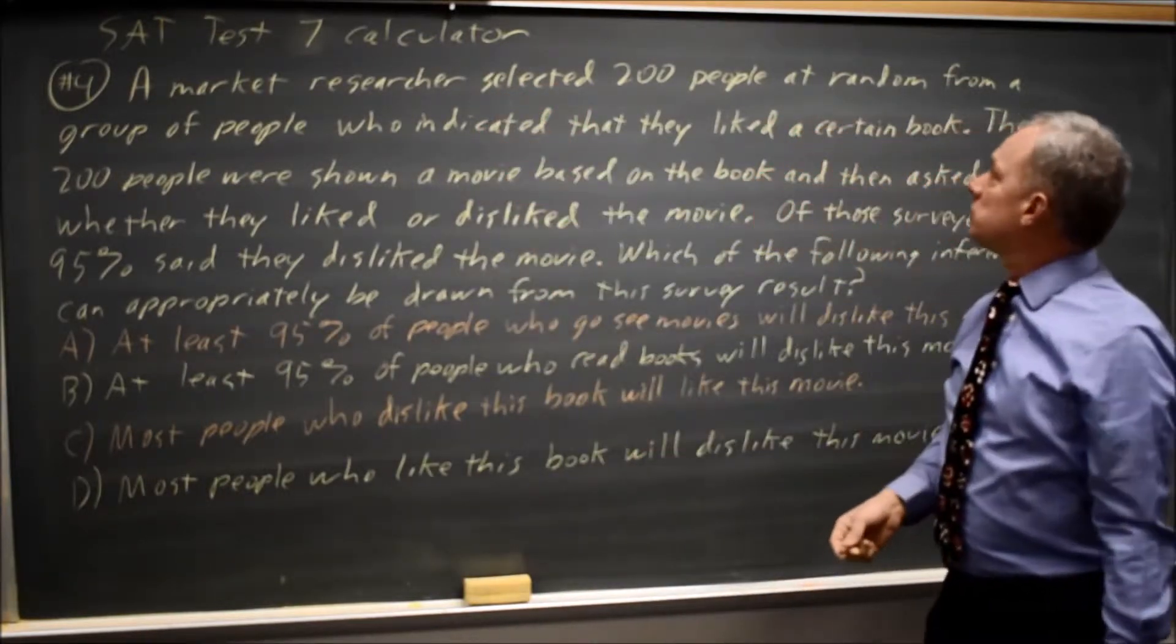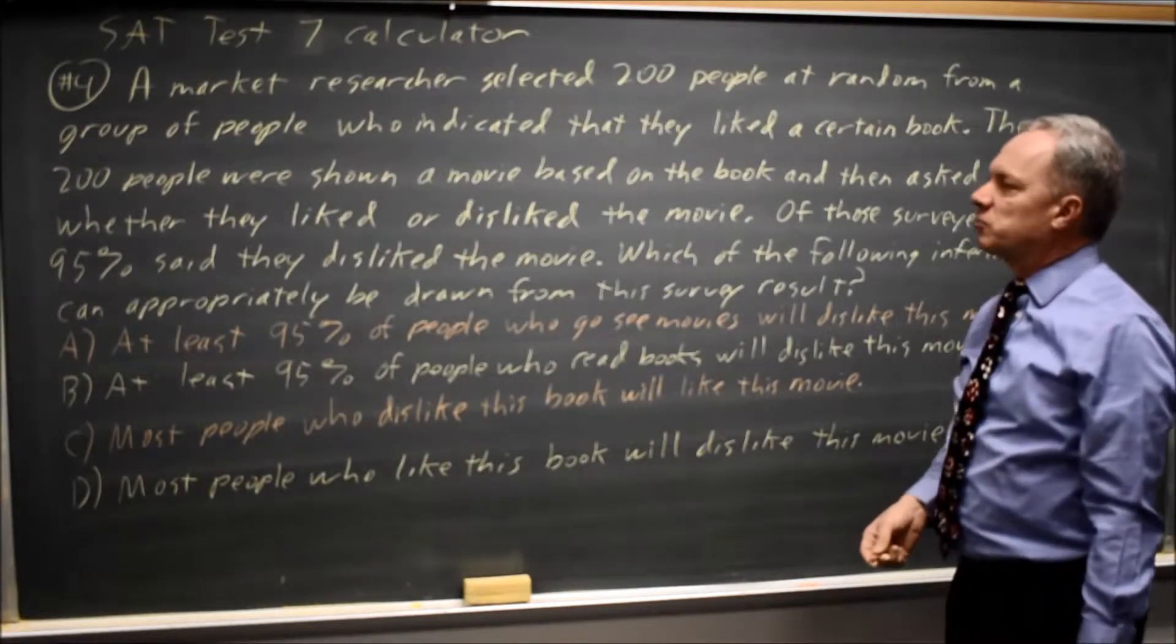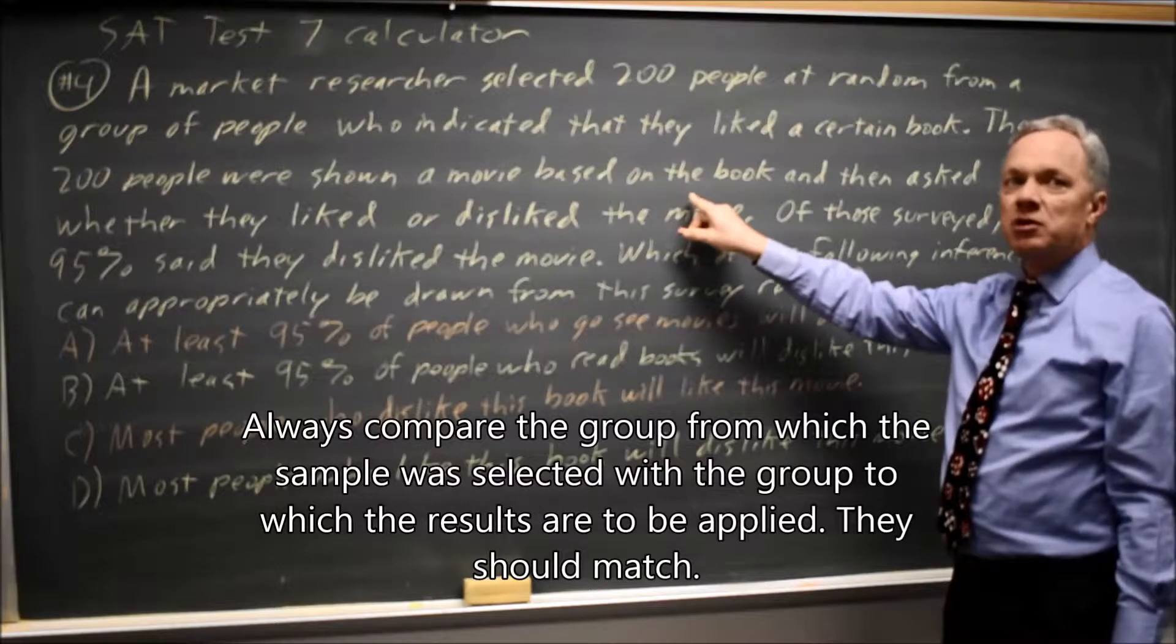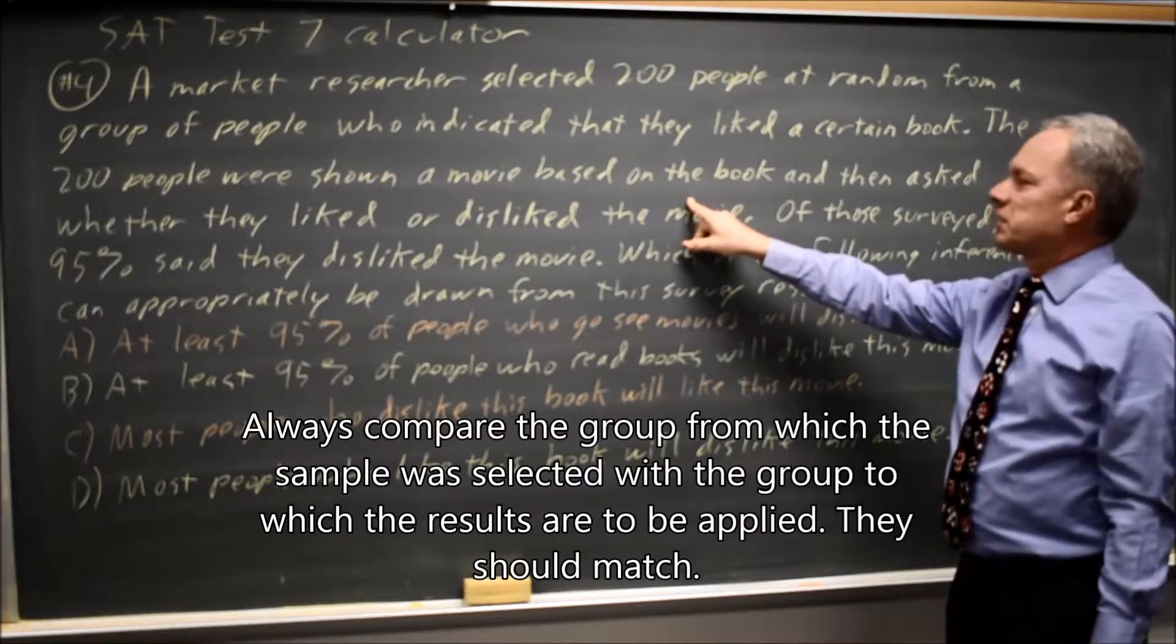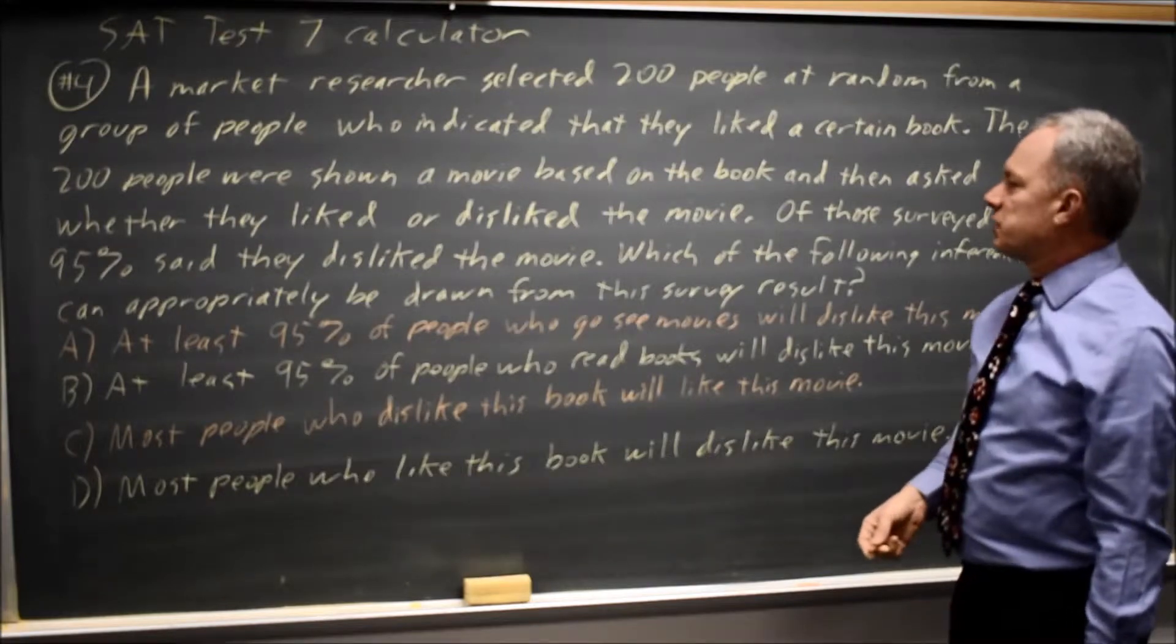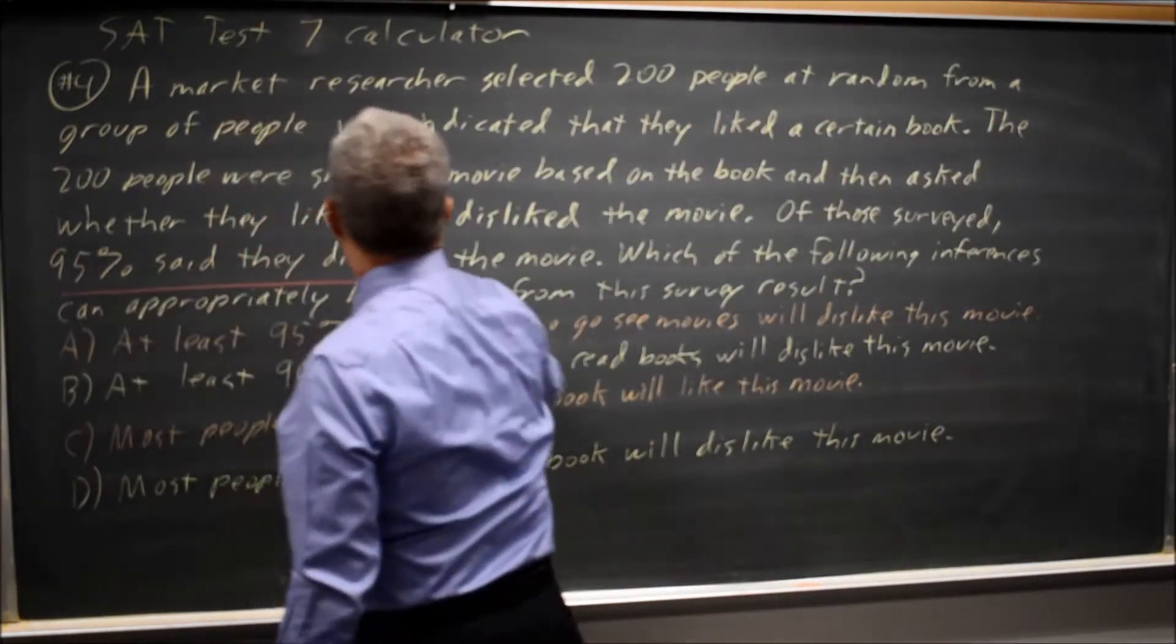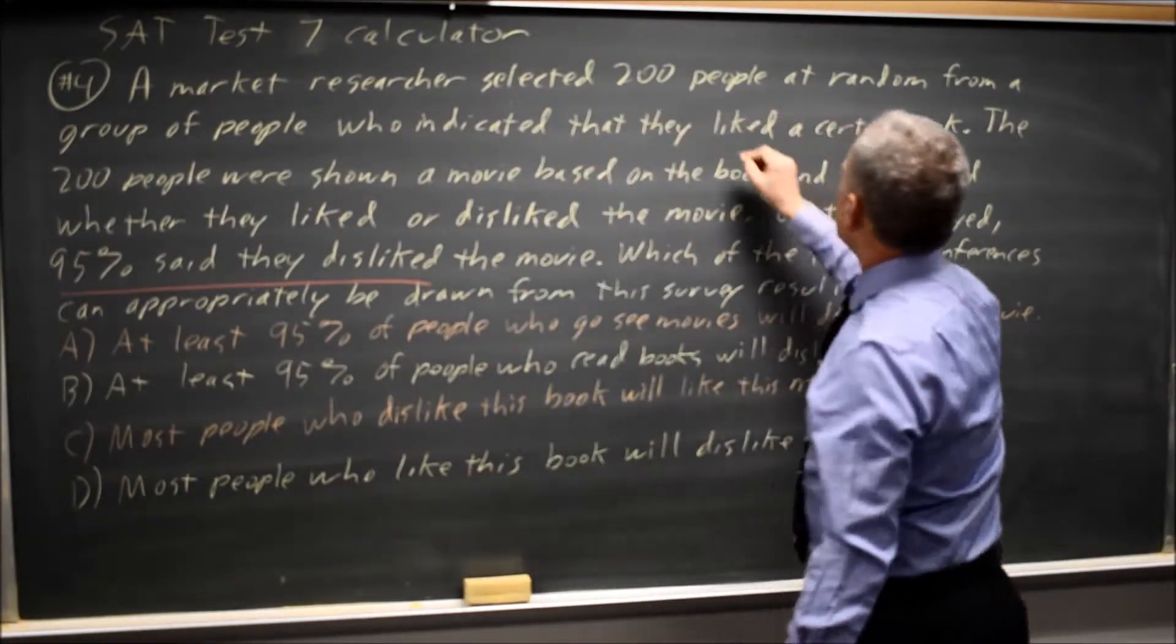A market researcher selected 200 people at random from a group of people who indicated that they liked a certain book. The 200 people were shown a movie based on the book and asked whether they liked or disliked the movie. Of those surveyed, 95% said they disliked the movie. And this is a survey of people who liked the book.